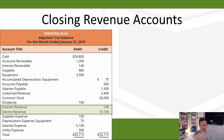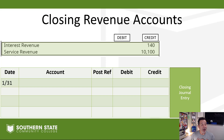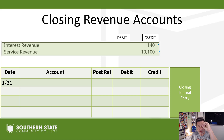Closing entry number one: we've got to close our revenue accounts. Looking at the adjusted trial balance, we have two revenue accounts — interest revenue and service revenue. We've got to get those down to zero. They currently have credit balances: a $140 credit balance in interest revenue and a $10,100 credit balance in service revenue. Our goal is to get both of them to zero.